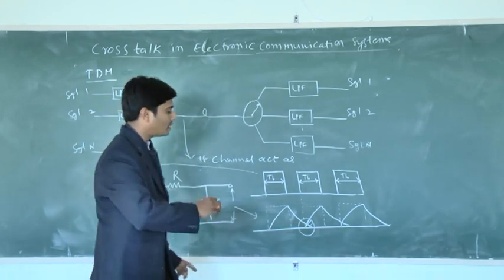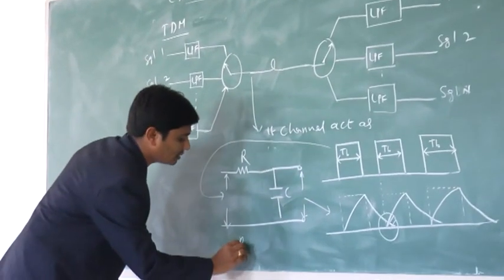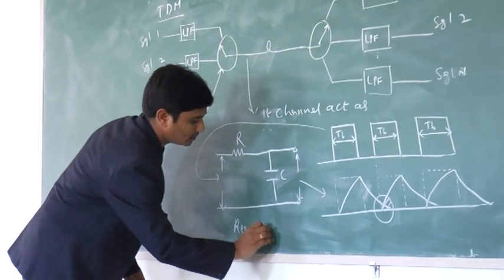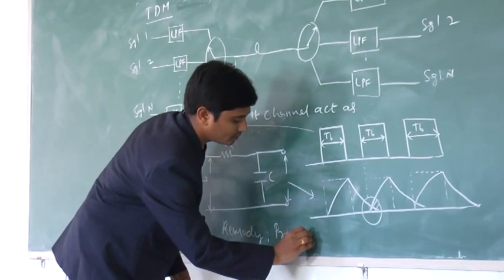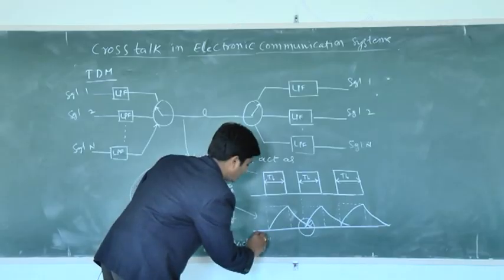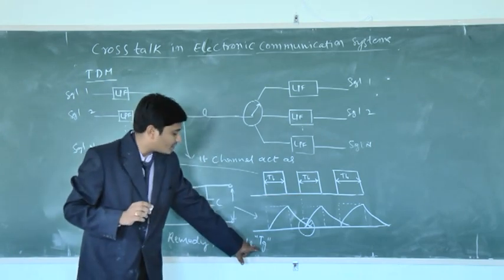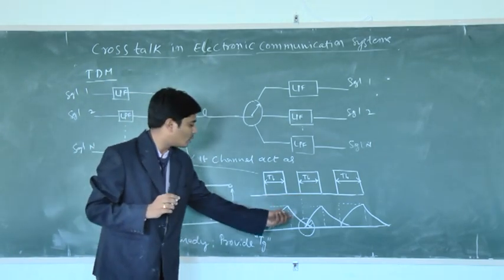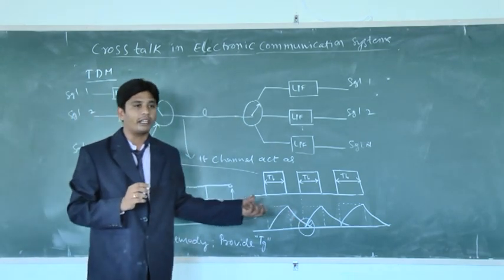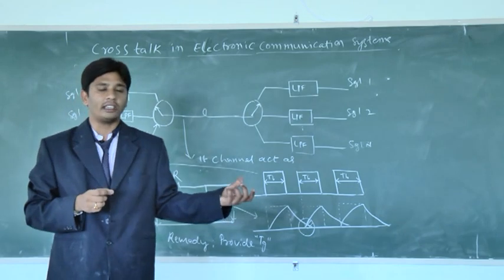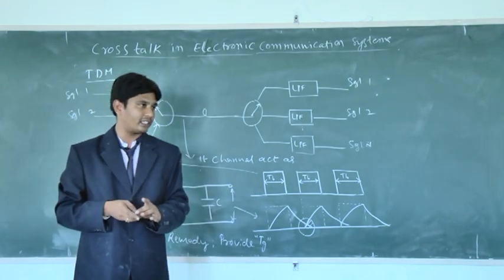Then we can remove this cross-talk, just provide a remedy for this cross-talk. Provide a guard time Tg between two different message signals. This time period of Tg, that is guard time, is equal to discharging period of this particular capacitor value. Then we can completely remove the cross-talk in the electronic communication system, especially in the time-division multiplexing systems.